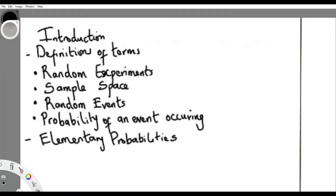Welcome back. In the introductory aspects, let's try to understand some terms because we're going to be using them as we go on in this tutorial. Firstly, what is a random experiment? A random experiment is anything that is capable of giving an outcome — any experiment carried out that is capable of giving an outcome is a random experiment.